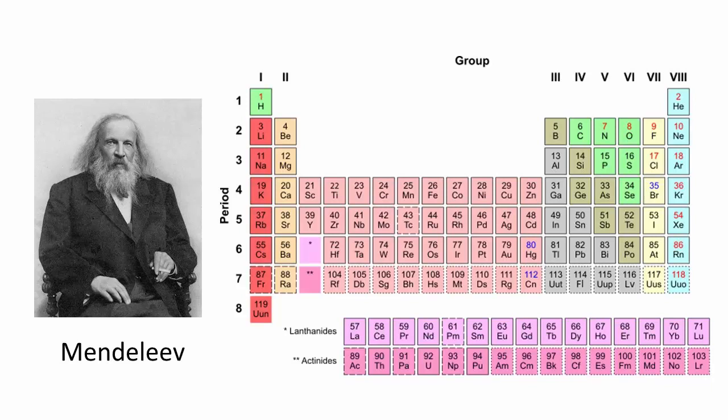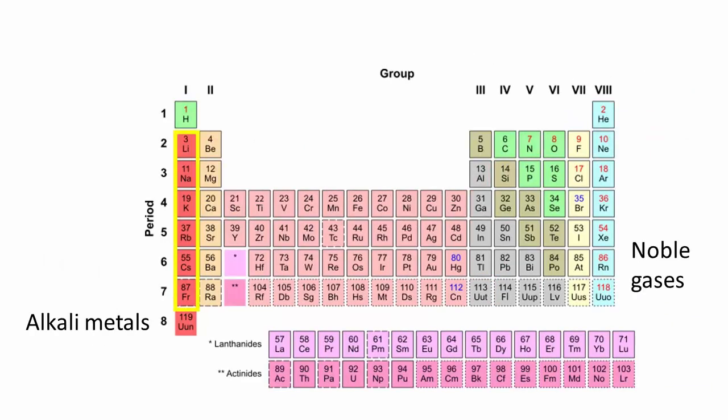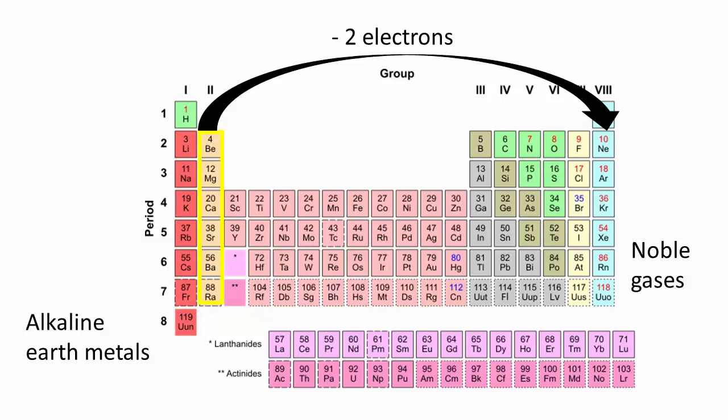This chapter will focus on periodic properties of atoms. We will also be looking at the most popular ions. On the left-hand side of the periodic table, alkali metals such as sodium and potassium lose an electron to obtain the configuration of a noble gas. Similarly, alkaline earth metals such as magnesium and calcium lose two electrons to achieve the configuration of a noble gas.